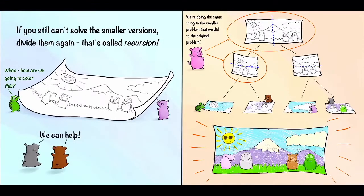Now, if you still can't solve the smaller versions, divide them again. That's called recursion. To see an example, here we have this giant picture. And Turtle says, whoa, how are we going to color this? Fortunately, they have some friends.